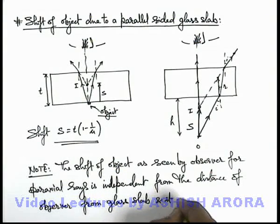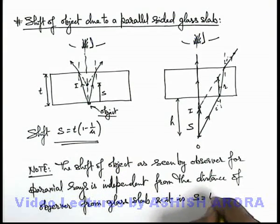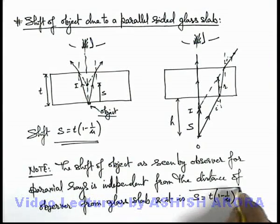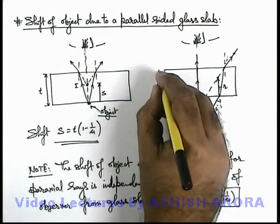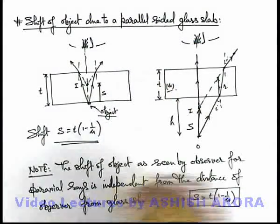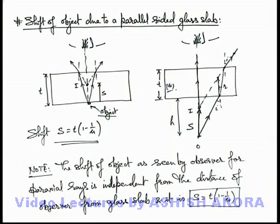And the value of shift will remain the same: t(1 - 1/μ), where t is the thickness of glass slab and μ is the refractive index. So for any situation, whether glass or any medium slab, the object when looked from the other side of the slab appears to be closer to the slab by a distance t(1 - 1/μ).